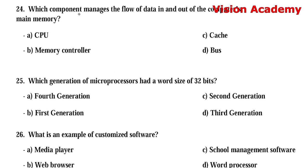Question number 24: Which component manages the flow of data in and out of the computer's main memory? Option A: CPU. Option B: memory controller. Option C: cache. Option D: bus. The right answer is Option B, memory controller.